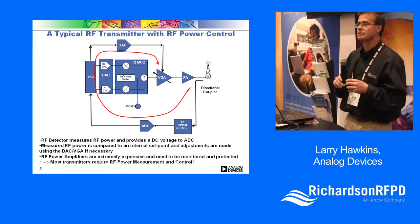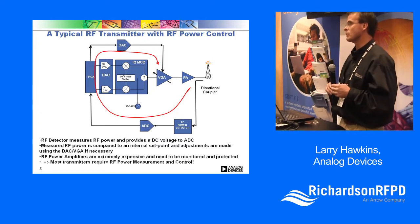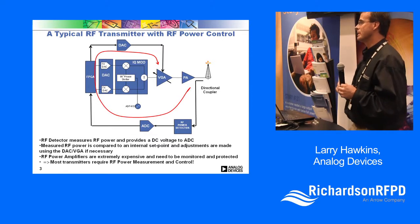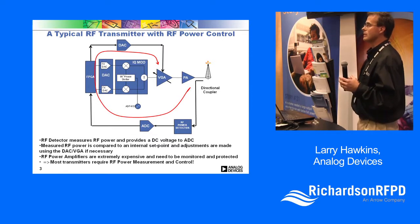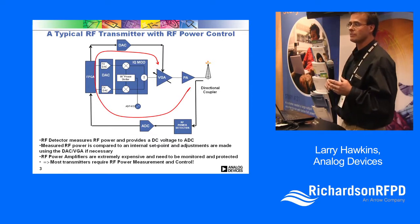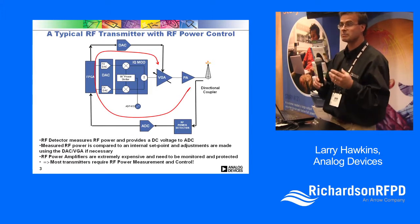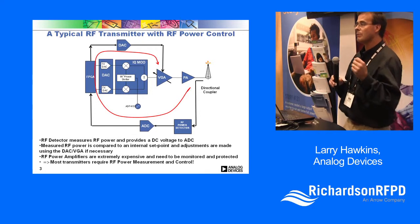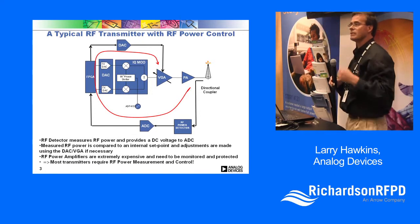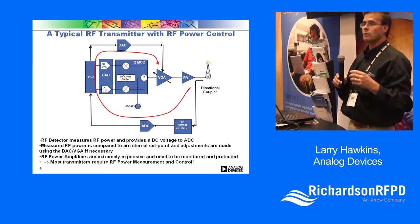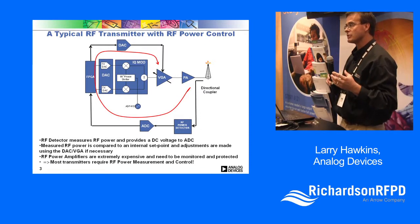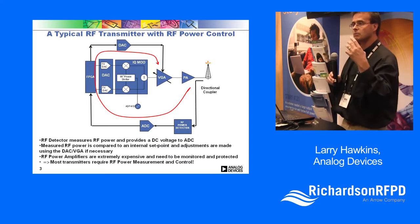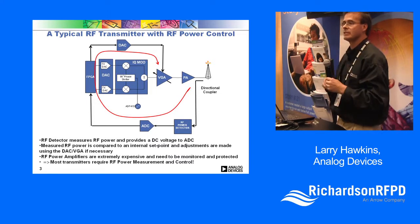Power detectors are used in many different applications. One of the main applications is to determine the power of a high-power amplifier. A high-power amplifier is a very expensive unit, and the FCC controls how much power you can actually put into the air. So what people do is measure that output power — the more accurately they can measure it, the more power they can send into the air.